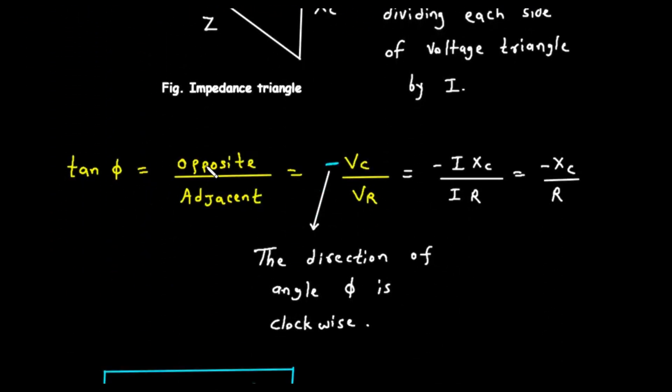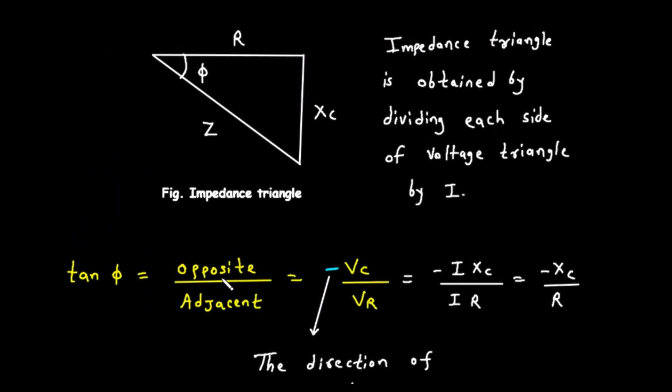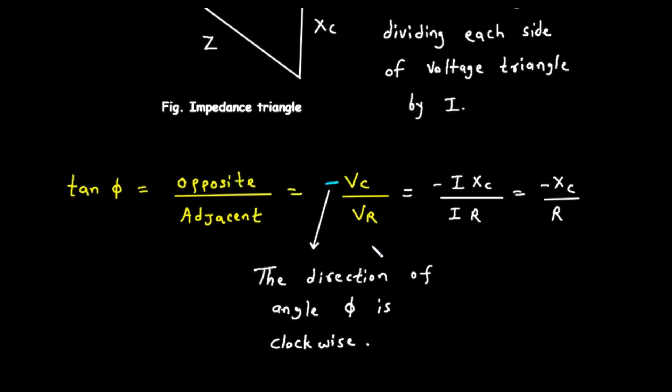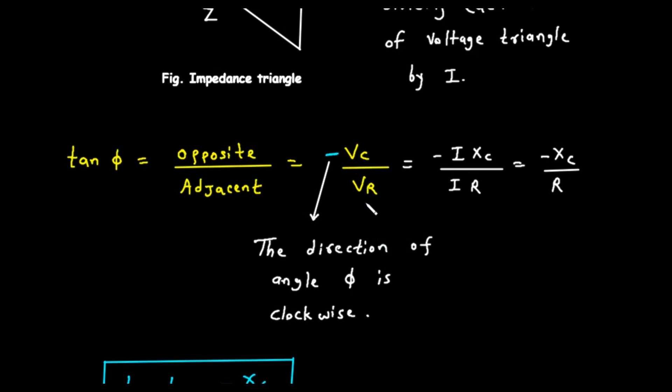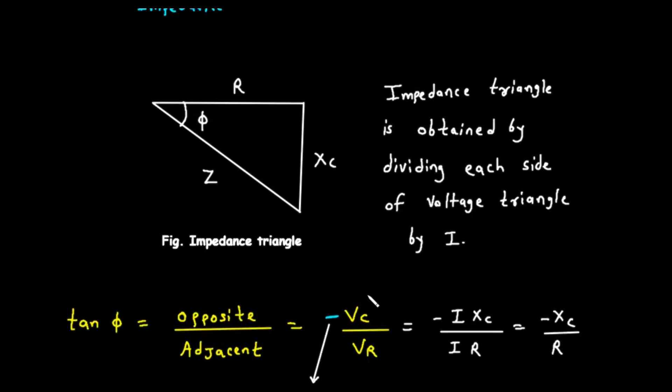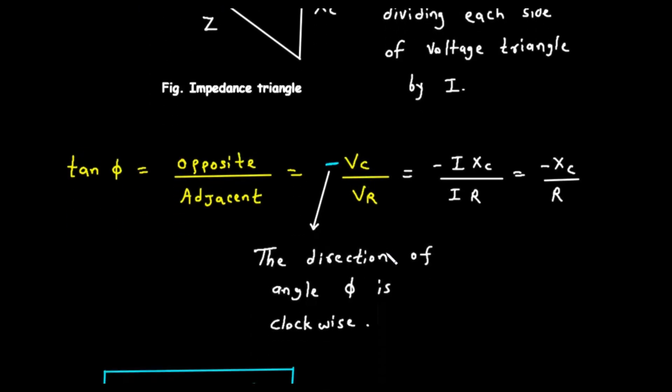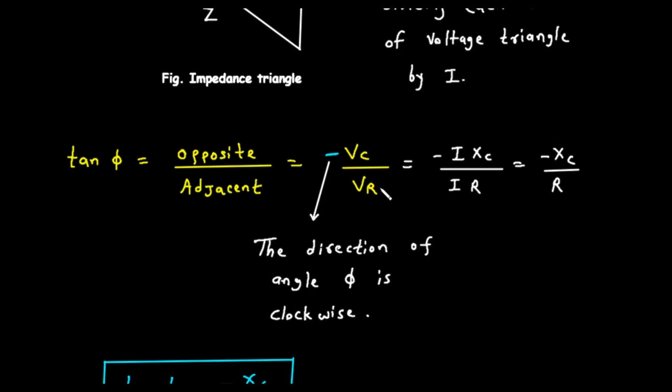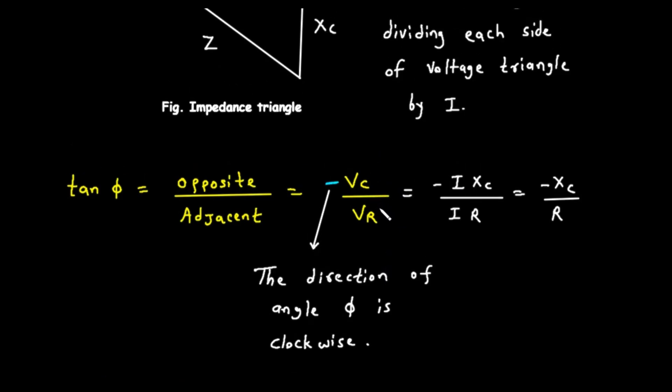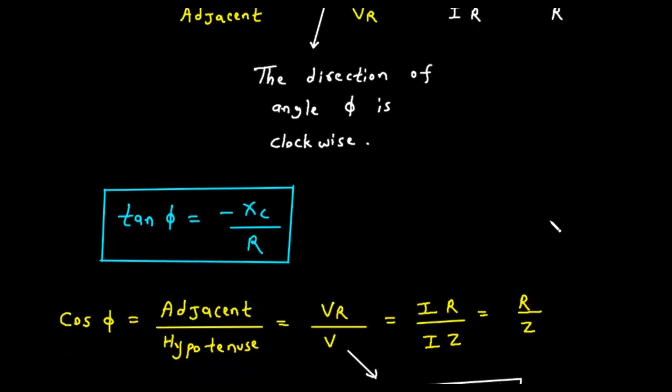We can calculate this angle using trigonometry on our triangles. The tangent of an angle is the ratio of the opposite side to the adjacent side. So tan of phi equals VC divided by VR. Since VC points downwards, we often consider it negative in calculations, so we can write tan of phi equals negative VC divided by VR. Substituting our formulas, this becomes negative I times XC divided by I times R. The I's cancel out, leaving us with tan of phi equals negative XC divided by R.